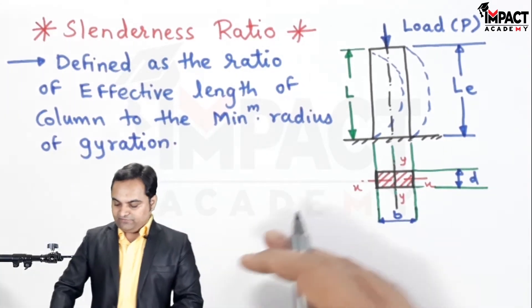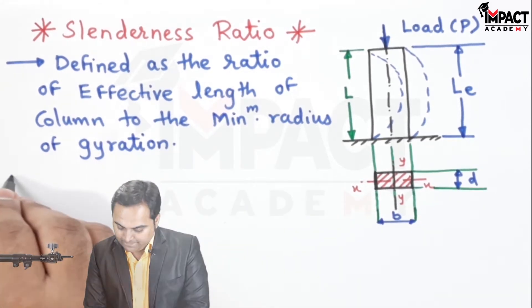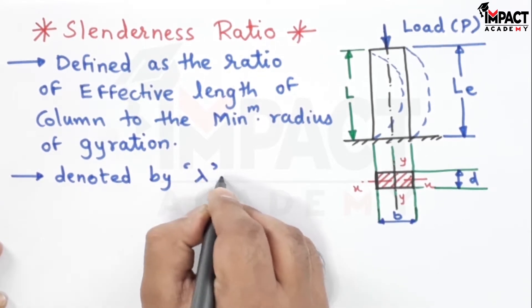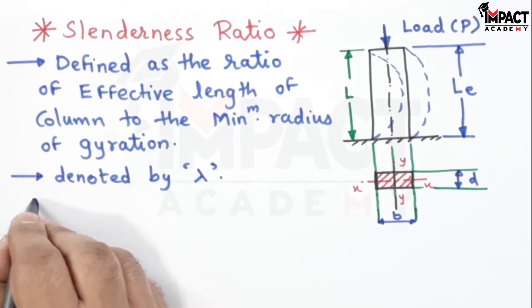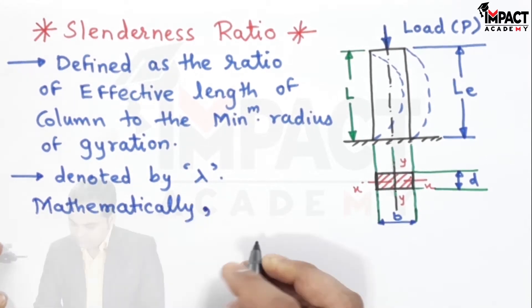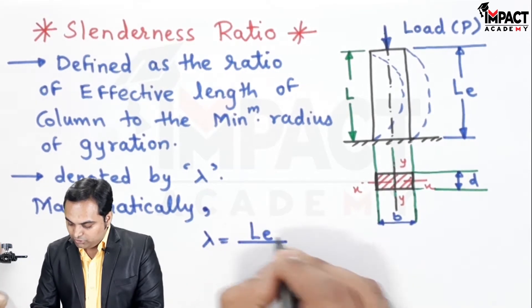It is defined as the ratio of the effective length of column to the minimum radius of gyration, denoted by lambda. The formula is given by lambda, or slenderness ratio, equals the effective length of the column divided by K minimum, which is the minimum radius of gyration.